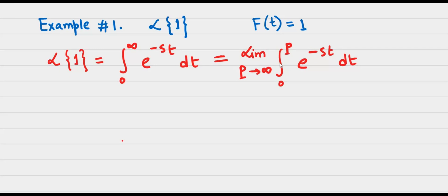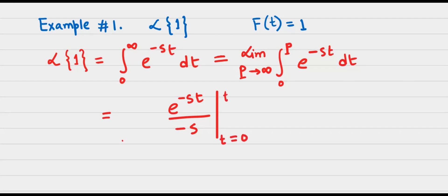We can go ahead and integrate this out. If you integrate e to the power negative st, you end up with e to the power negative st divided by negative s. That's the integration, and of course you have to plug in the limits, which is t equals 0 to t equals p, so it becomes a function of p, and then you take the limit as p goes to infinity.